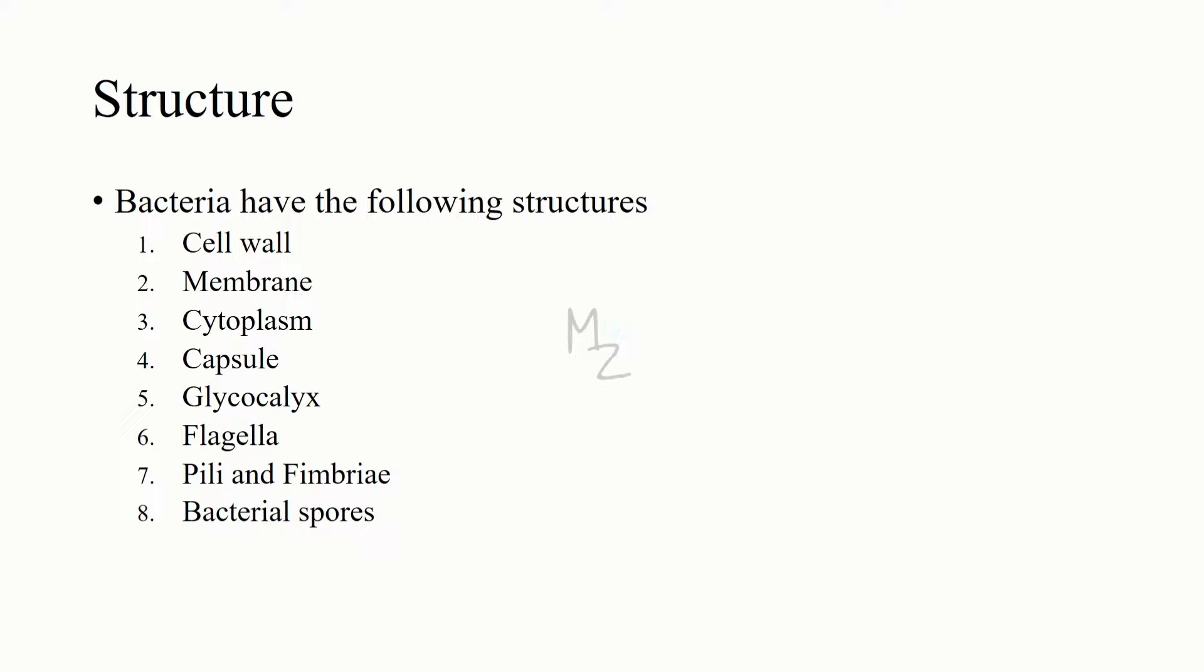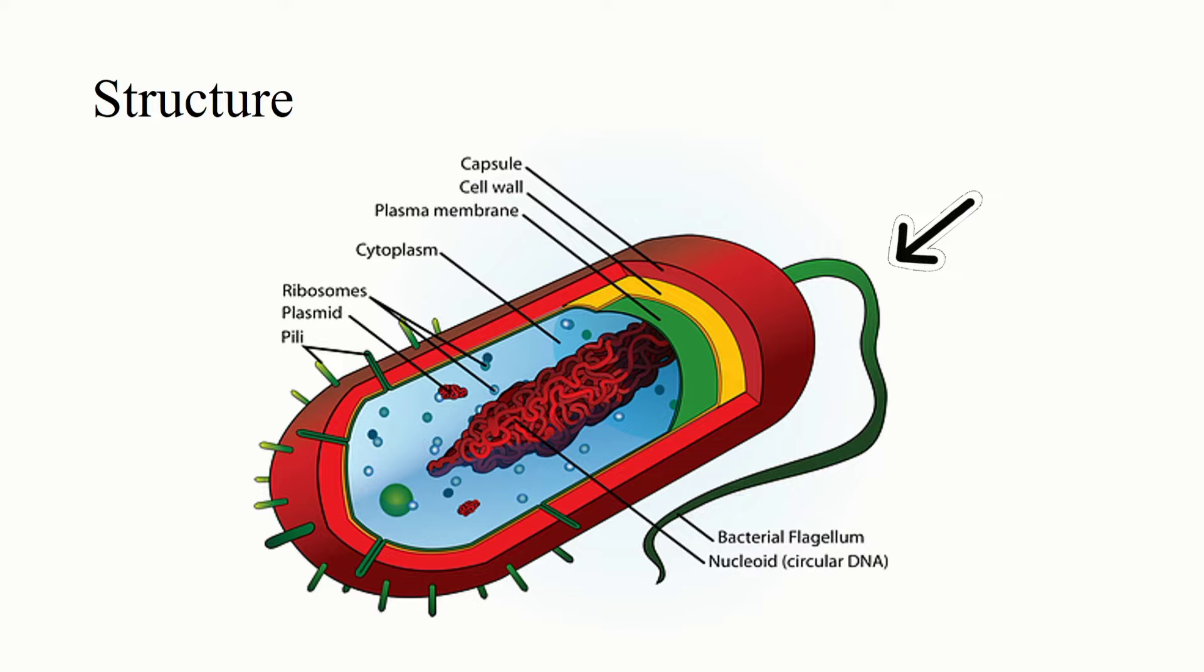Structure: bacteria have got the following structures. Cell wall, cell membrane or plasma membrane, cytoplasm, capsule, glycocalyx, flagella, pili and fimbriae, and at the end, bacterial spores. This tail-like structure, it's not a tail, it is actually the bacterial flagellum. This red covering is the capsule, and this hair-like structure on the capsule are called pili.